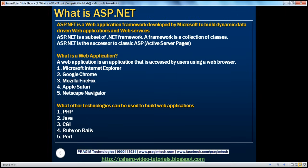ASP.NET was introduced in the year 2002 with .NET framework 1.0. Were we using any Microsoft technology before 2002 to build web applications? Absolutely. That technology is called Classic ASP — Active Server Pages. Prior to .NET, prior to ASP.NET, we were using Classic ASP. There are several advantages of using ASP.NET over Classic ASP to build web applications, which we will be talking about in a later session.